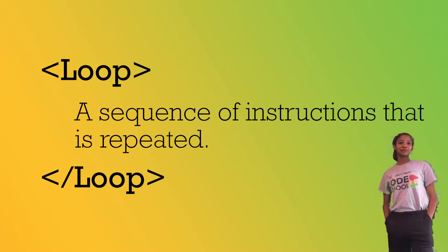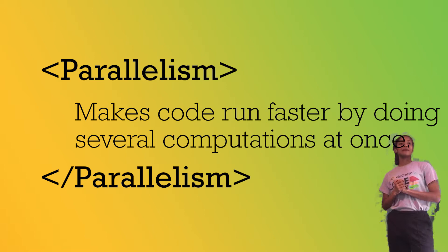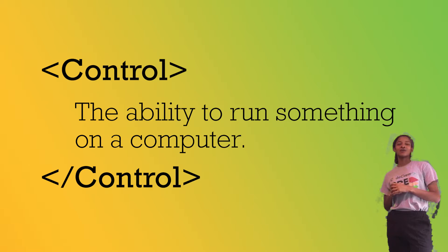Hi everyone, welcome to the vocab wall. Let's learn some new tech terms for today's lesson. The first word is a loop — a sequence of instructions that is continually repeated until a condition is met. Next we have the term event, which is an action detected by a software program. An event can be a user action or a system action. Now let's learn about parallelism — a type of computation that makes a program faster by performing several computations at the same time. Control is the ability to manage, organize, or run something on a computer, and in today's lesson we will be experimenting with control blocks.